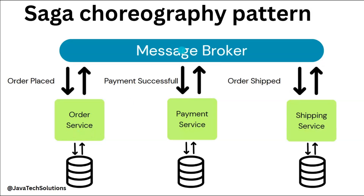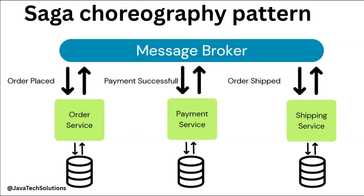Once we push the data here, the payment service basically is looking at that data from this message broker. That means there is no link between the order service and the payment service, and similarly for the shipping service — they individually run and look for what they need. Payment service is basically looking for data from the message broker; if any data is available it will pull that data and process it accordingly. So there are no dependencies — these work in an asynchronous way.